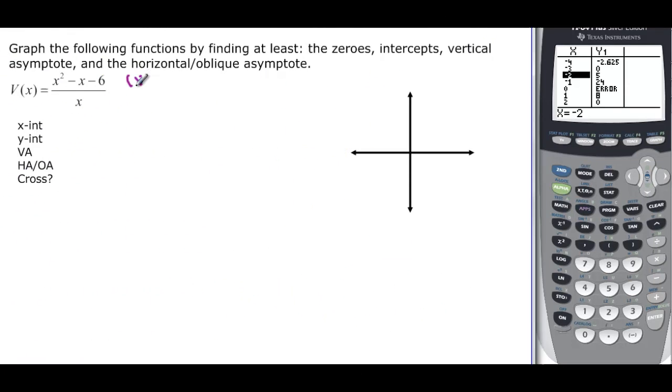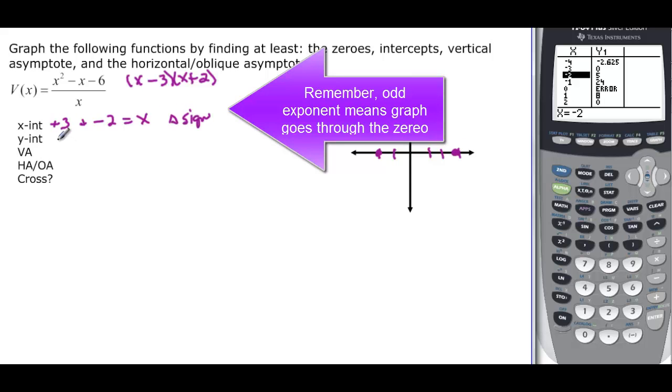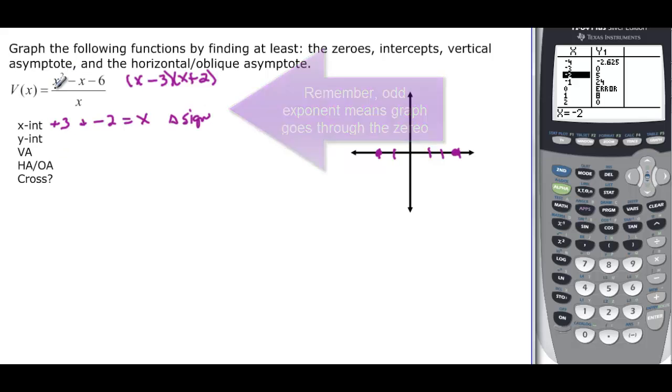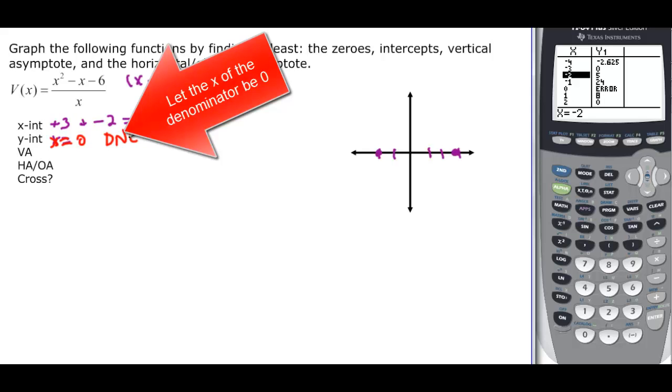X-intercepts. Let's do those in purple. x minus 3, x plus 2. So the zeros are at positive 3 and negative 2. And they're both going to go through. They're both going to change signs. The y-intercept. Again, we're going to have this zero down here that we're dividing by because we have to let x equal zero. So this does not exist. I'm not going to have anything red on my graph.